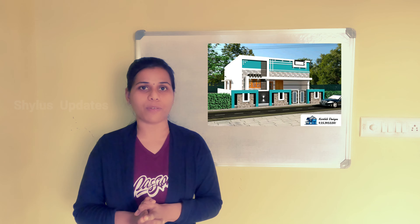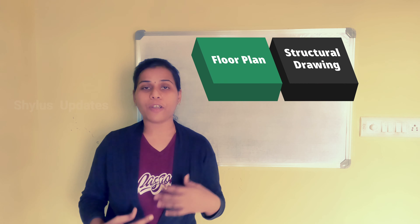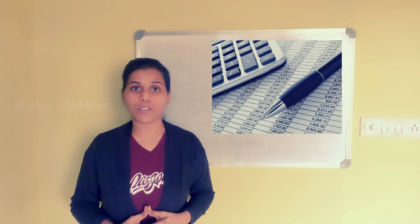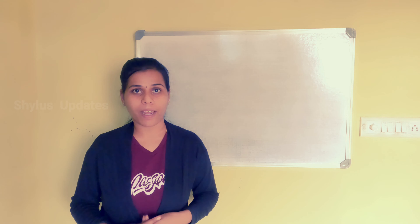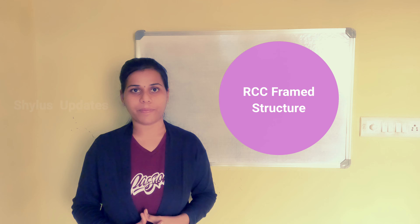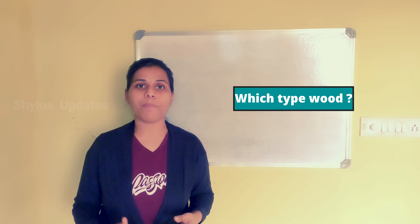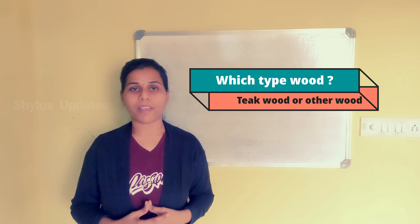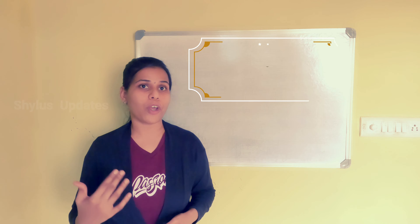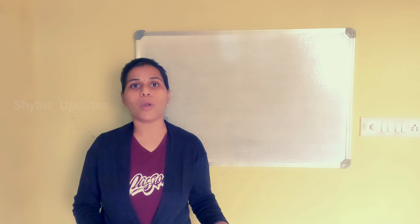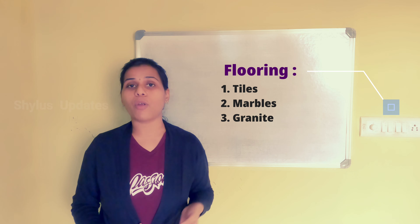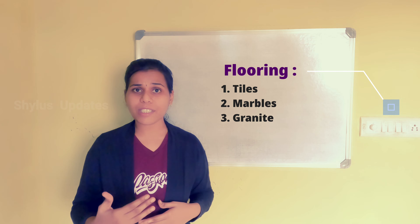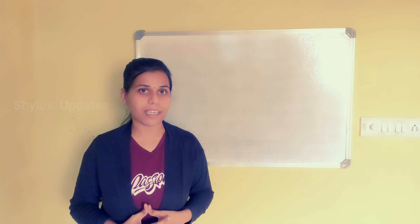If you are ready to construct a house, the first thing you have to do is consult an engineer and give your house plan to them. House plan means it includes both the floor plan and also the structural drawing. Ask them to prepare a detailed estimation for your house. You have to tell them whether you are going to construct a load bearing structure or framed structure. Which type of wood you are going to use — whether teak wood or any other kind. How much amount you are going to spend for elevation work, and which type of flooring — whether tiles, marbles, or granite. You have to tell each and everything to the concerned engineer in detail.